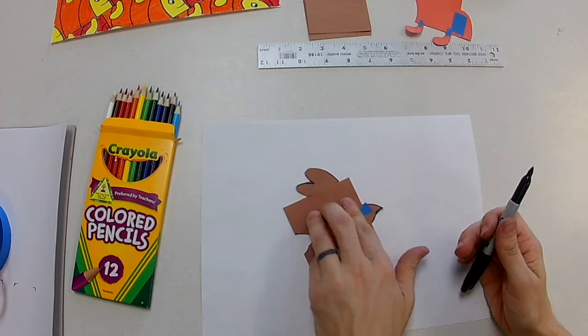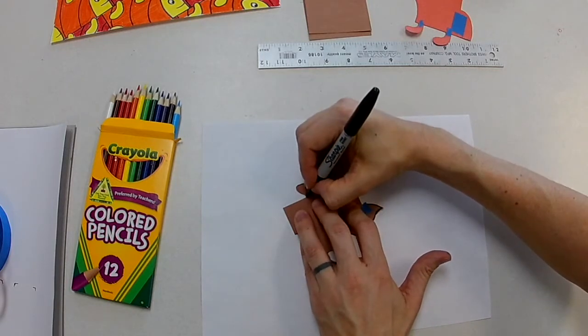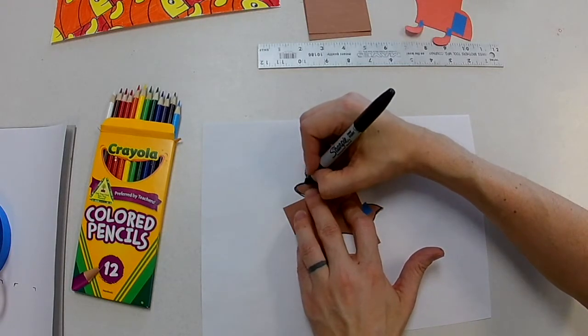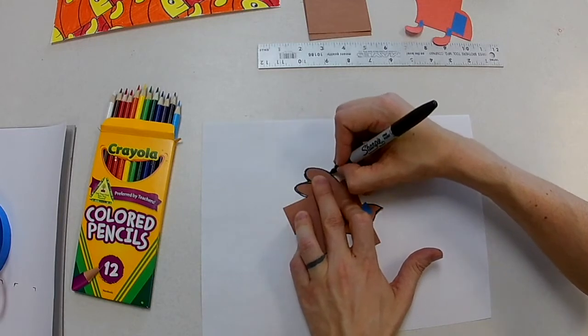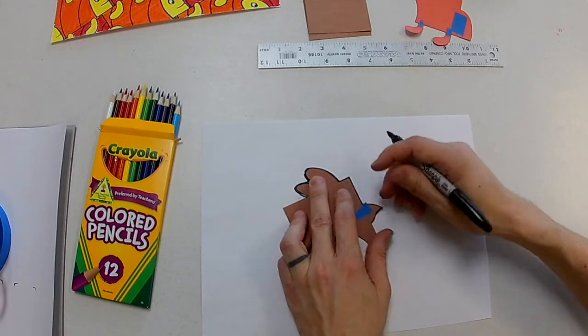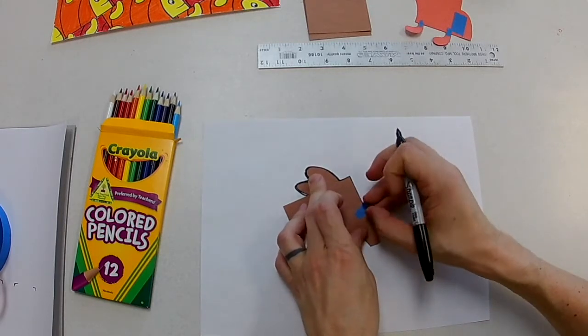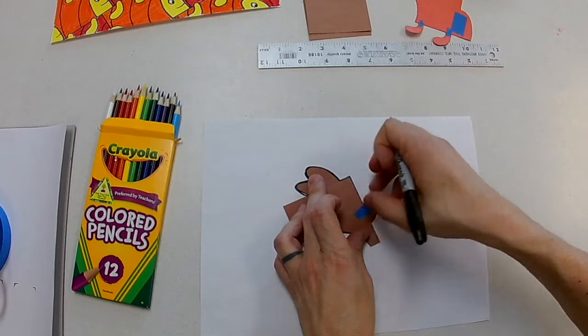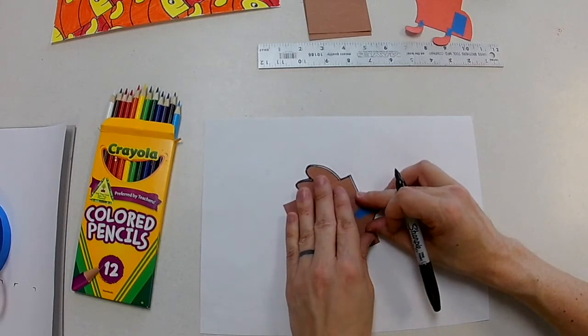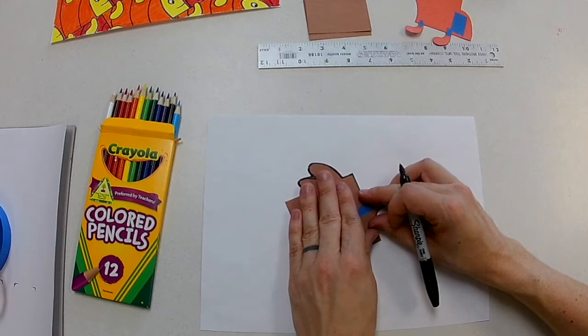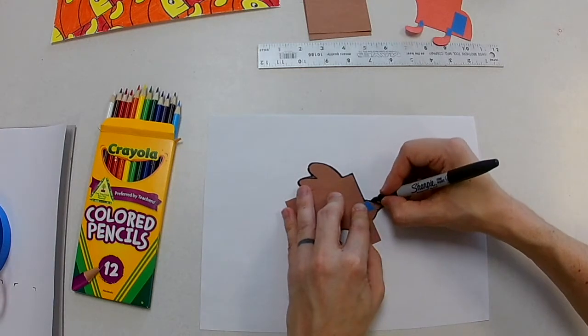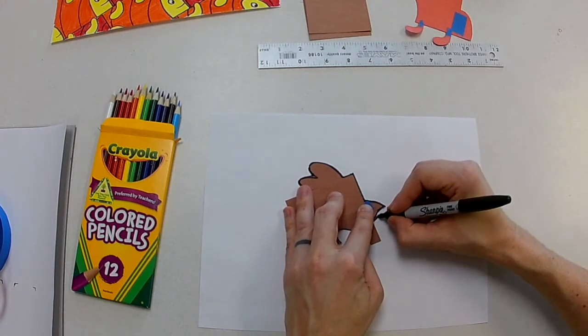And then you trace your shape. So you got to hold it down, make sure it doesn't move, and then you trace it. Notice how my tape is kind of sticking out over there. I need to fold that down. I don't want to trace over that tape. Okay, make sure it's lined up. Okay, it's lined back up and then I continue making my Angry Bird.